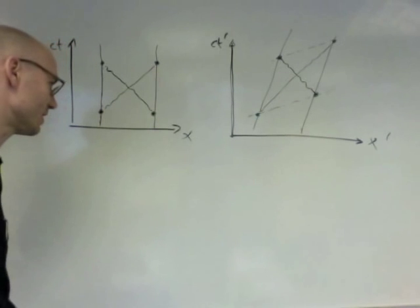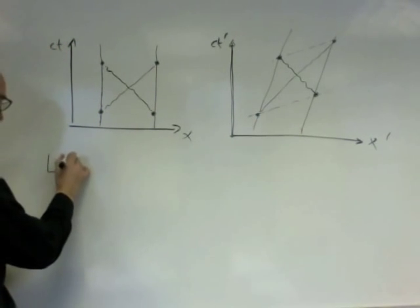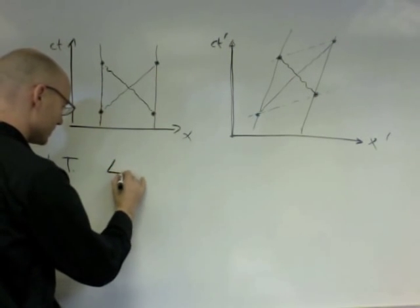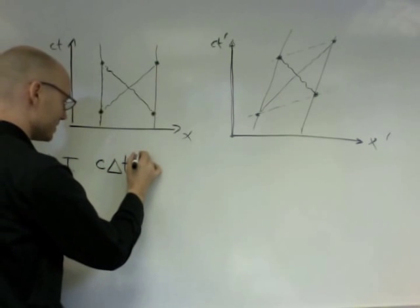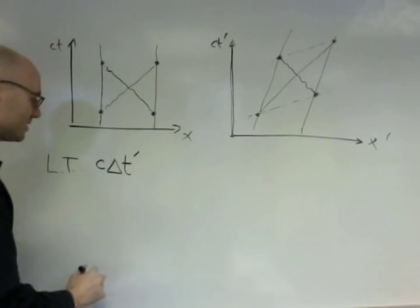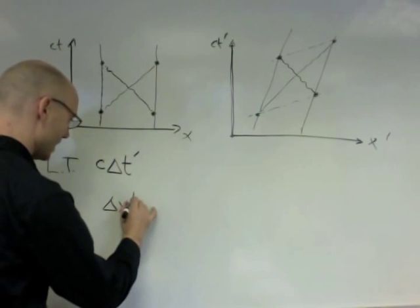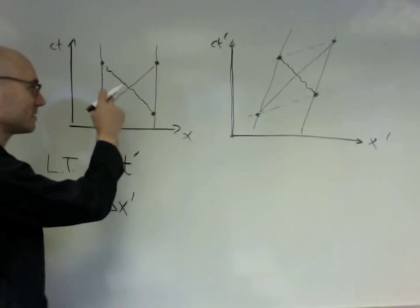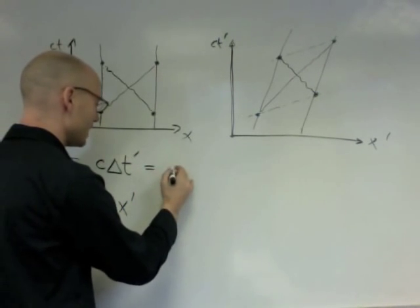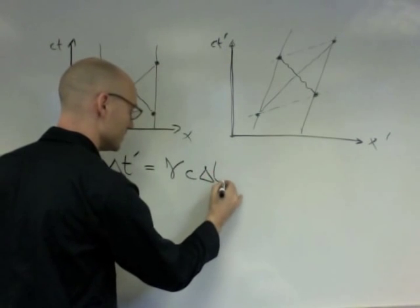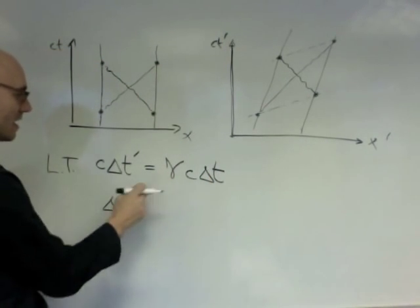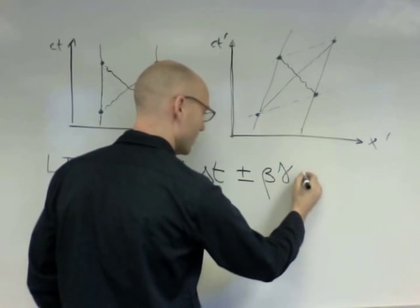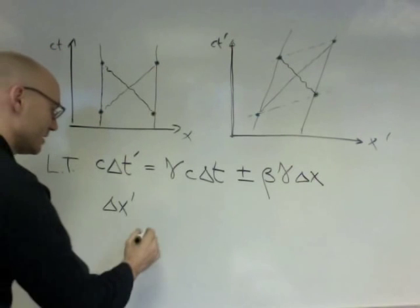Now, in recitation, you use the Lorentz transformation, and the Lorentz transformation has the following form, that if you have a c delta t prime, that is in this frame that we're trying to calculate, and a delta x prime in this frame that we're trying to calculate, based on a delta t and a delta x in the original frame, they're related by gamma c delta t. In this frame, that's time dilation, but then there's a plus or minus beta gamma delta x.